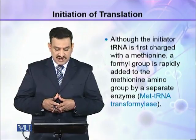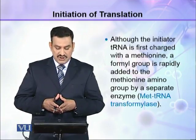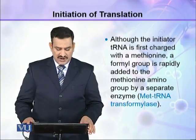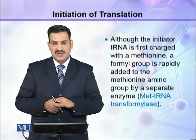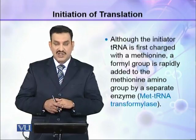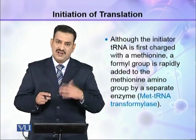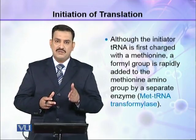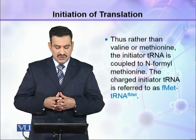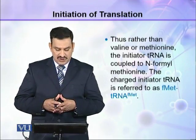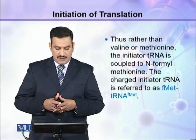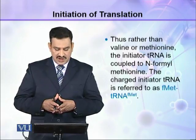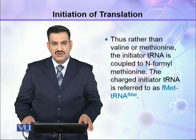Although the initiator tRNA is first charged with methionine, a formyl group is rapidly added to the methionine amino group by a separate enzyme called Met-tRNA transformylase. This formyl group addition transforms the methionine into formyl-methionine. Thus, rather than valine or methionine, the initiator tRNA is coupled to N-formyl methionine. The charged initiator tRNA is referred to as fMet-tRNA.